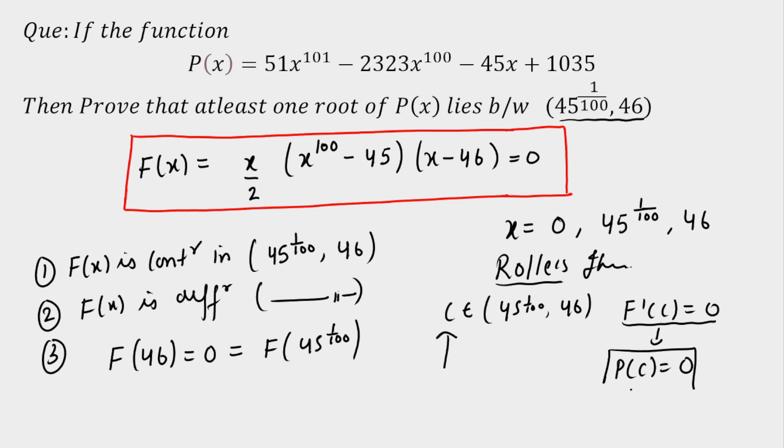So if P(c) is equal to 0, that means c is one of the root here, and the root range of the root is lying between the 100th root of 45 to 46, and hence proved. And that will be all.